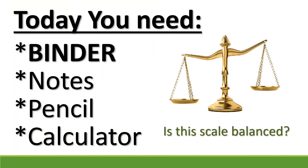We are going to start doing multi-step equations today and solving them. When we solve equations, it's all about balance. That up there is a picture of a scale. Would you say that that scale is balanced? One side is lower than the other, right? So what does it mean to be balanced? The same on each side. We need to keep that in mind. When we're solving equations, we're going to be moving stuff across an equal sign, and we have to make sure we keep our equation balanced. Each side of the equal sign needs to be balanced.